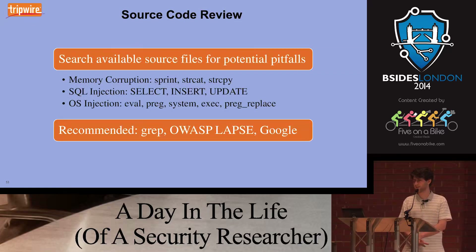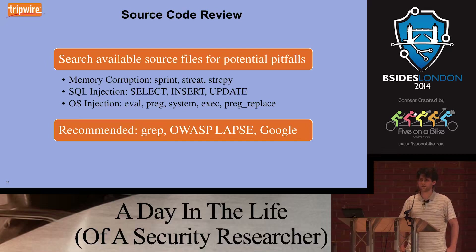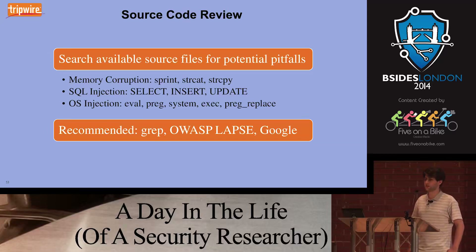Looking at source code review, the general idea is that you're going to be looking for patterns within the code that are indicative of security failings. Traditional memory corruption vulnerabilities came from sprintf, strcat, strcpy. For SQL injection, start looking for places where you see SQL verbs, perhaps augmented with looking for format string specifiers — those are particularly suspicious and should have a second look for exploitability. For OS injection, depending on the language, there are a number of functions you should be looking for and verifying are being used safely.